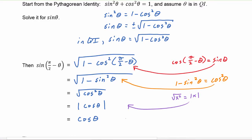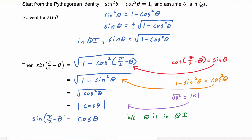Be sure to note this is because theta is in quadrant one. So now we've just proved the other co-function identity: that sine of pi over two minus theta is equal to cosine theta.